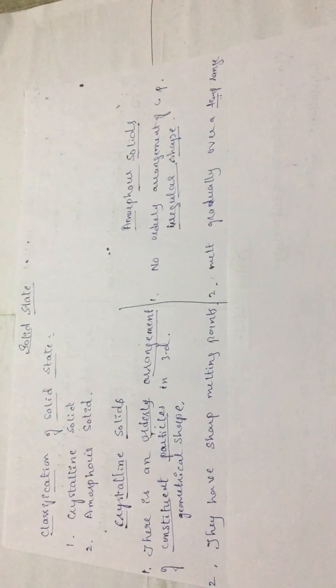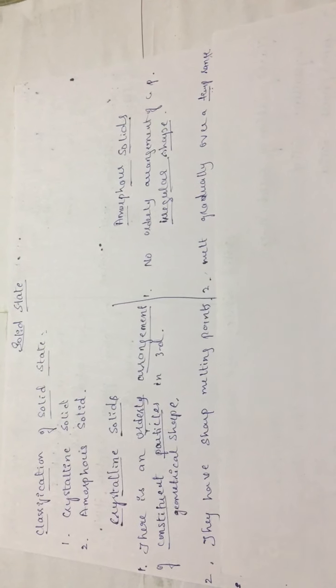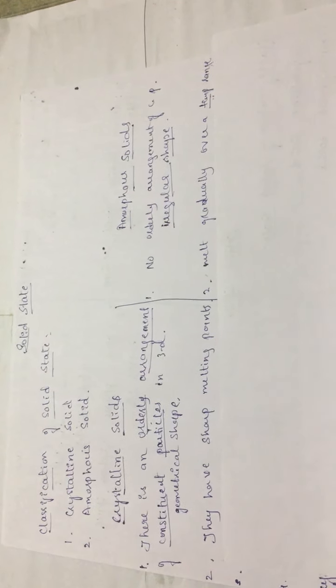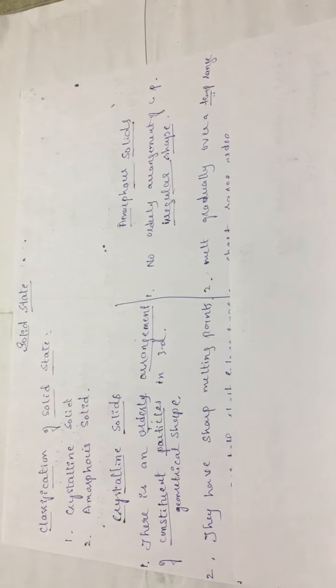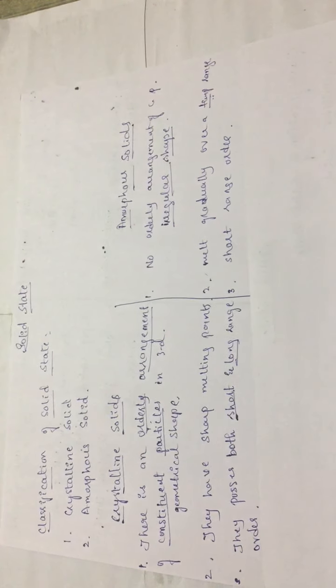The next difference: crystalline solids have sharp melting points — that means when the solid is converted into liquid, it gives a definite melting point. Amorphous solids, however, melt gradually over a range of temperatures.